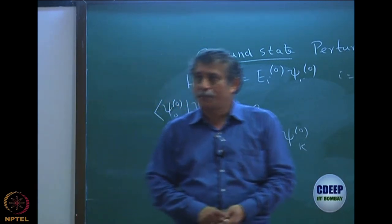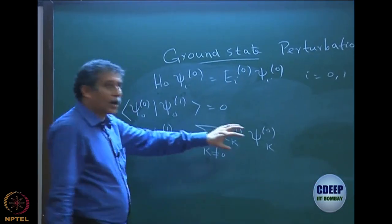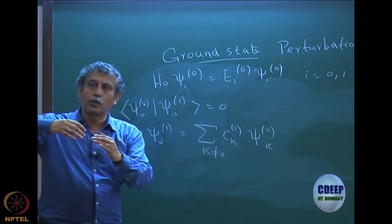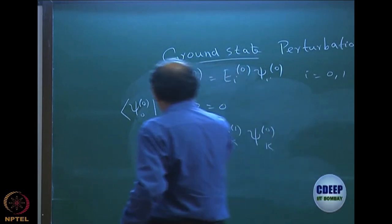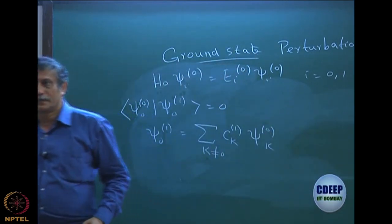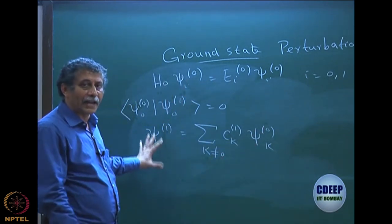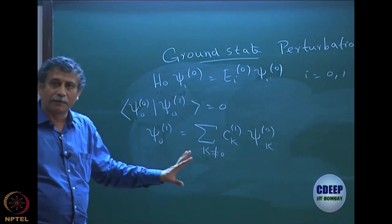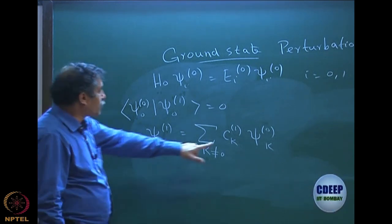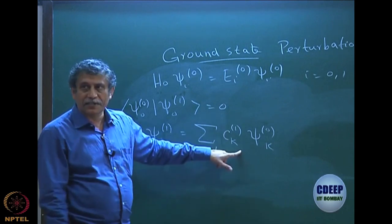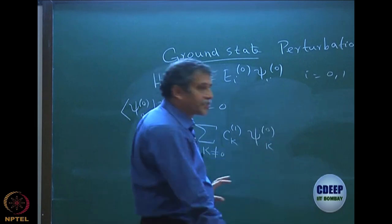Is it clear? For example, when I do Hartree-Fock perturbation, my first order correction to the wave function will not include Hartree-Fock itself, but it will include all other excited determinants — I am writing in a general way because it is supposed to be orthogonal to Hartree-Fock. That is what intermediate normalization means. I first write this expansion in a general form before putting in Hartree-Fock perturbation theory.